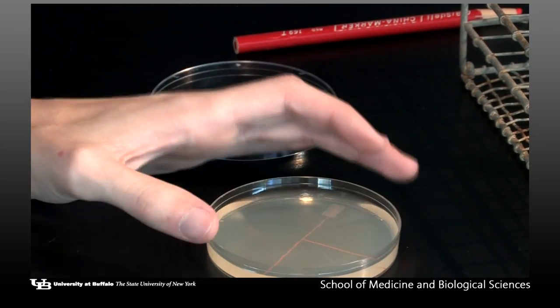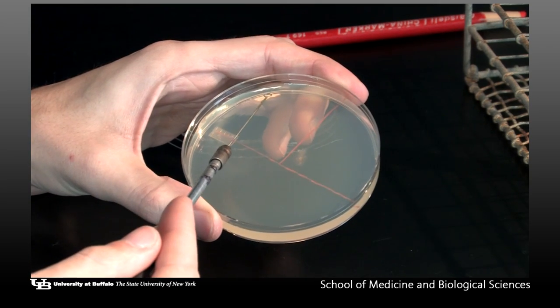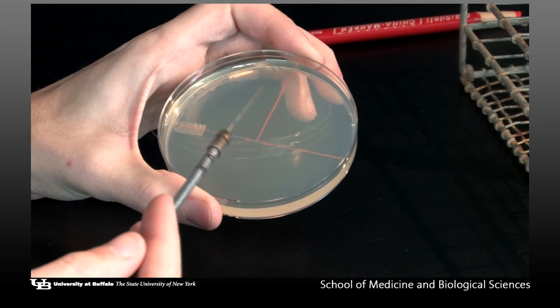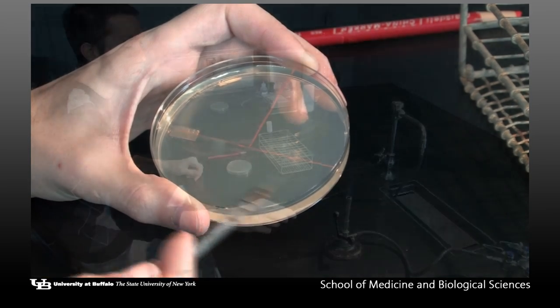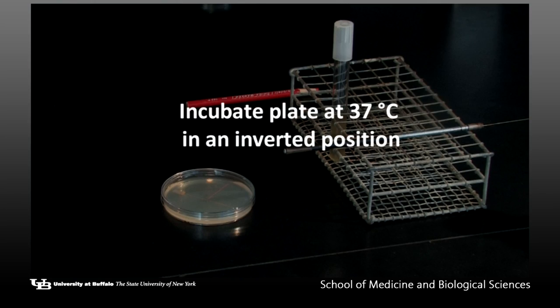Rotate the plate for inoculation of the last section. Here you will draw three to four streak lines from the second section to the third, then continue streaking the third section. Sterilize the loop. Incubate the plate at 37 degrees Celsius in an inverted position.